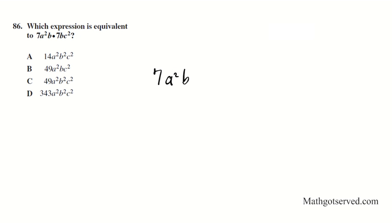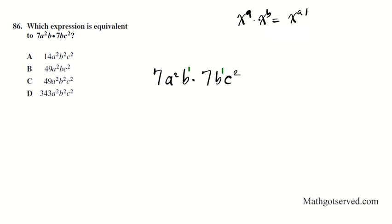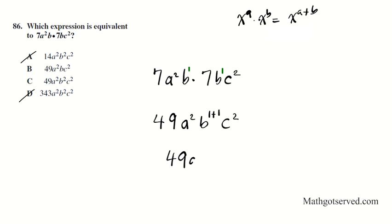Let's take a look at question 86. Which expression is equivalent to 7a squared b times 7b c squared? Same process — make sure all variables have powers: b to the 1st in each factor, a already has a power, c already has a power. 7 times 7 is 49 — that eliminates options A and B. a squared has nothing to combine with, so it stays as a squared. b to the 1st times b to the 1st gives b to the 1 plus 1, which is b squared. c squared stays alone. So we have 49a squared b squared c squared — answer is option letter C.